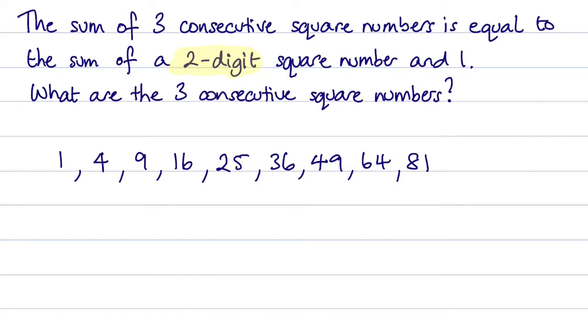So let's start with 1 plus 4 plus 9, because we're told we want the sum of three consecutive square numbers, and that sum is 14.